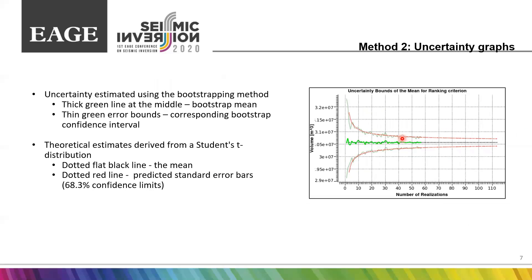The second approach is based on bootstrapping and theoretical predictions, giving two sets of curves. The first set: a thick green line in the middle represents the bootstrap mean, and thin green error bands show the corresponding bootstrap confidence intervals. Bootstrapping is done by random sampling with replacement, so the same sample can be used more than once. The second set of curves are theoretical estimates derived from Student's t-distribution: a dotted flat black line for the mean, and dotted red lines for the predicted standard error bars.